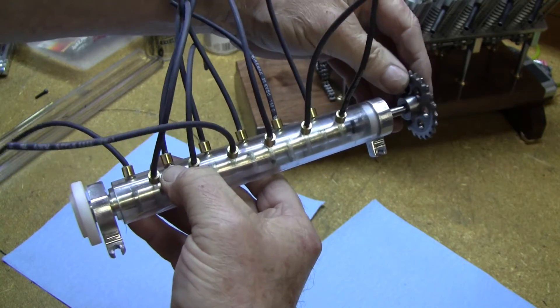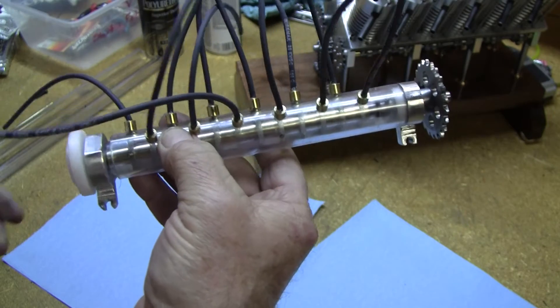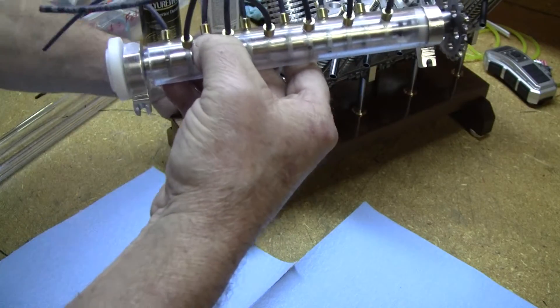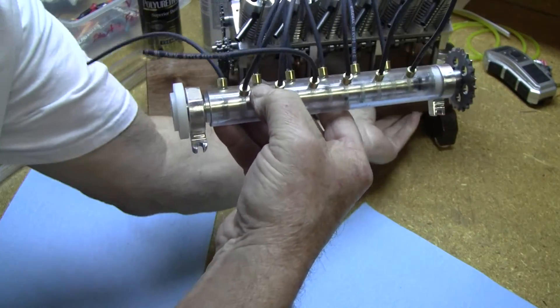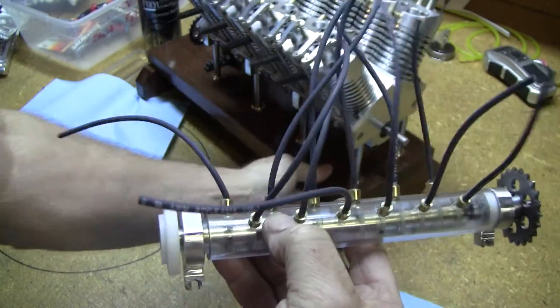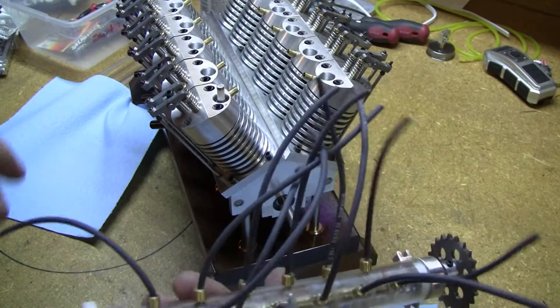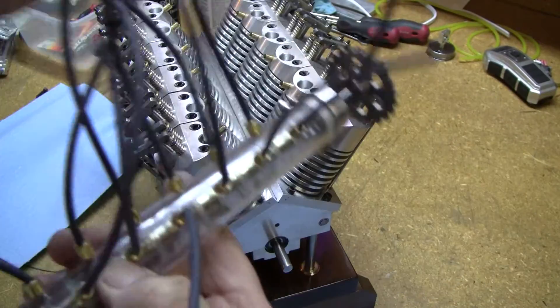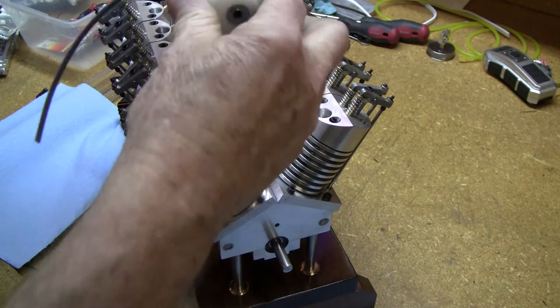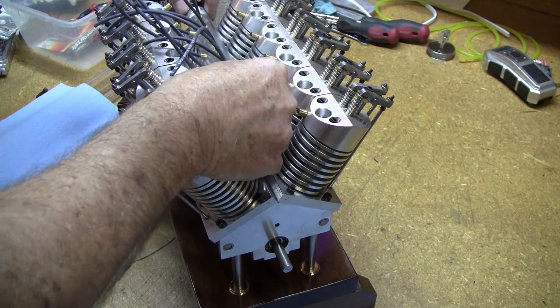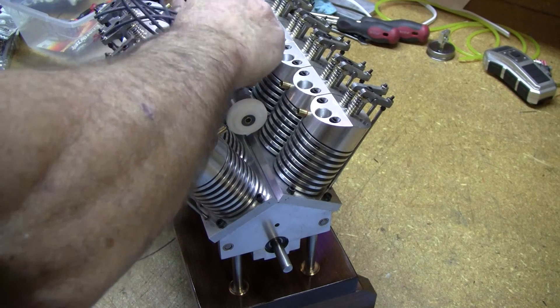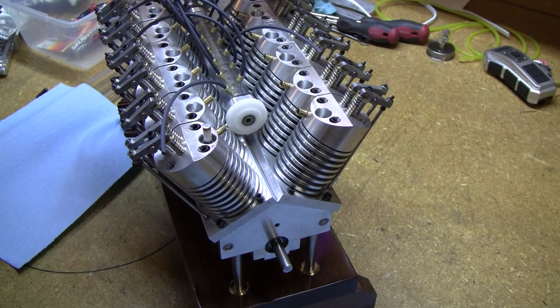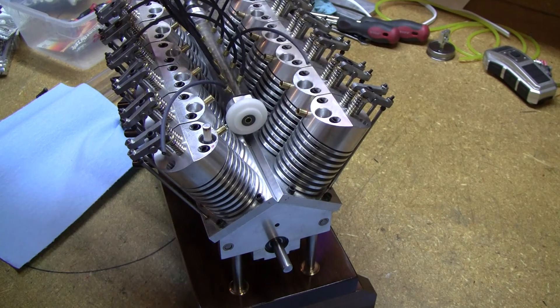And then this is the drive sprocket that goes on the other end. Now, let's see if we can get this turned around here. Here's the engine. And this will mount right in here like so. Each one of these wires goes right to the spark plug. You can see here.